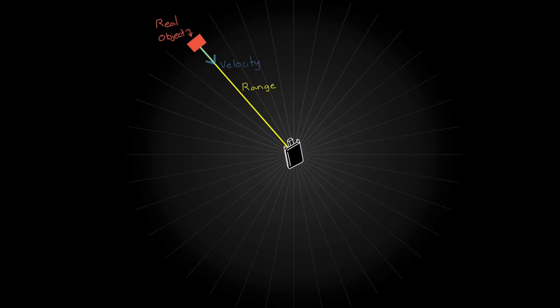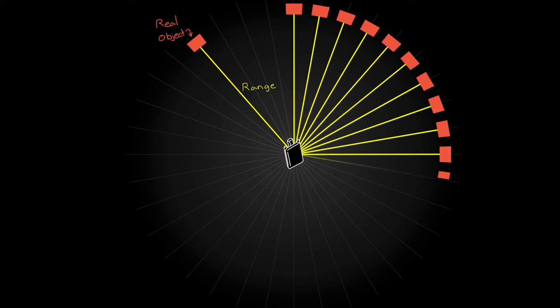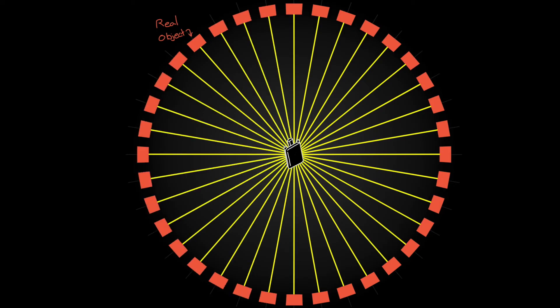However, the range measurement only means that the object is somewhere on this circle, and the velocity measurement means that we only know its speed and direction relative to the radar. So knowing just range and velocity is of limited use for tracking and understanding where the object actually is.